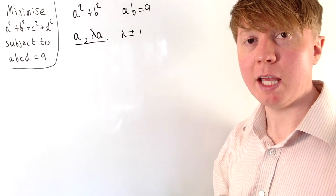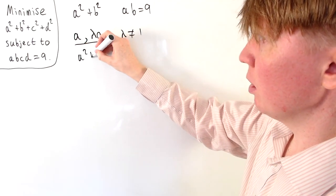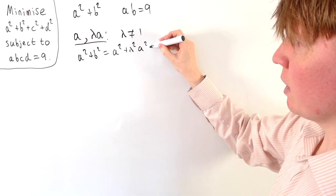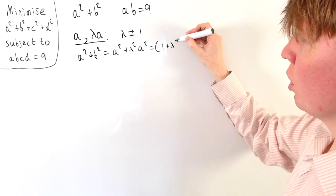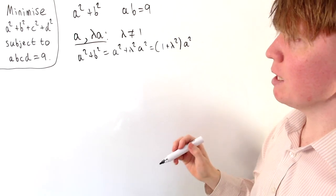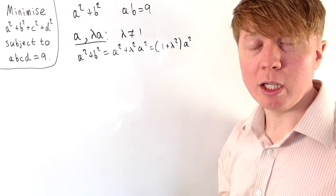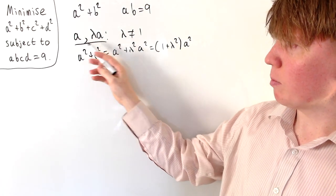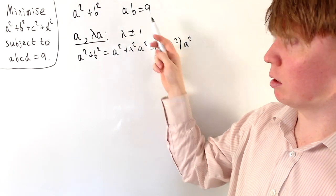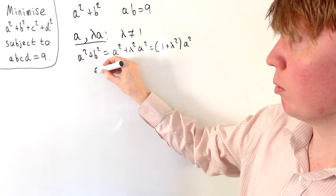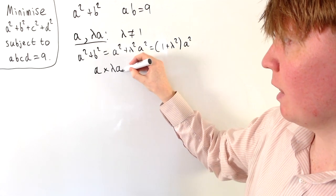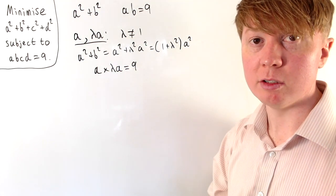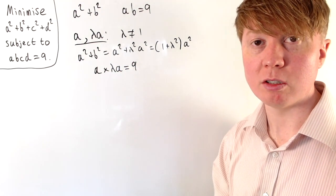So a squared plus b squared equals a squared plus lambda squared a squared, which factorises to (1 + lambda²) times a squared. This is our value when a and b aren't equal to each other. Now remember that the product has to be constant, so at the moment a times lambda a equals 9.